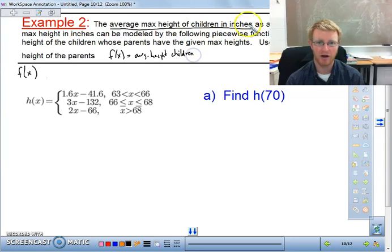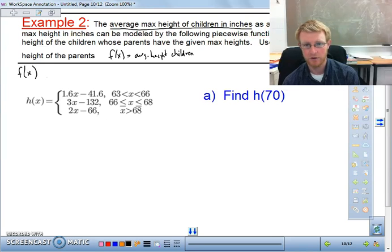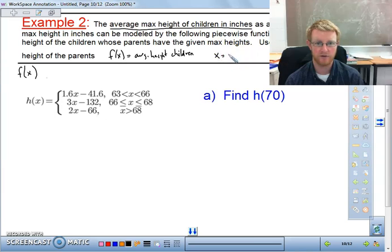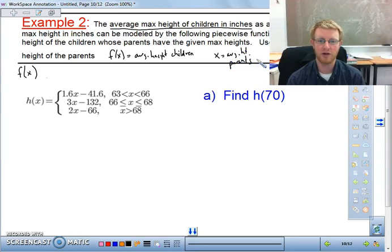And then the second part, as a function of their parents' max height, that will always be your input value. So in this case, we're going to say x is average height of the parents. So that's important to know before you do anything else. You need to know which one your x value is and which one your y value or your function value is before you can actually answer the question.